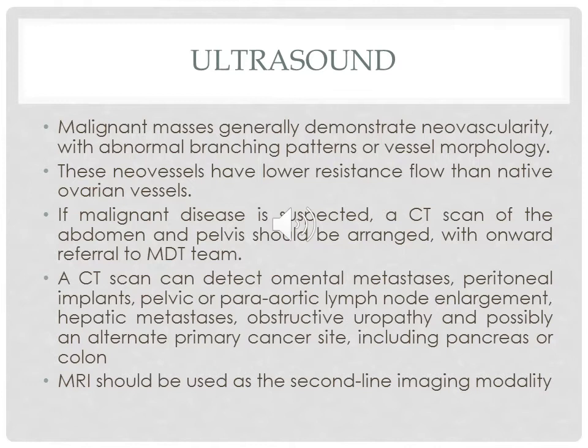MRI is not the first-line investigation but is the second line. It is of value when the cyst is indeterminate on ultrasound and cannot be differentiated between benign and malignant. In this case, MRI can help identify vegetations as well as ascites.